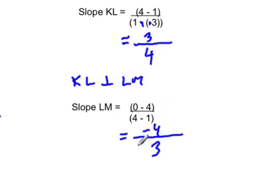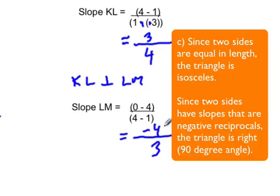And so for part c, where it asks what conclusion can you make about the triangle, the conclusion that you can make from part a is that it's isosceles, that the triangle is isosceles.